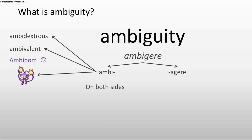As you know, ambidextrous means using both hands, and ambivalent means having two different sides, and ambipom has two tails with hands on it.